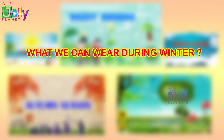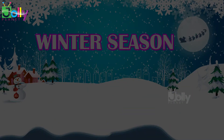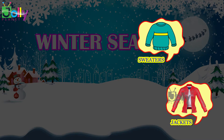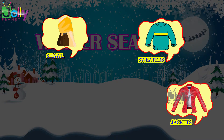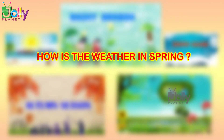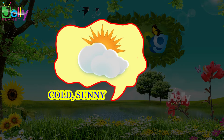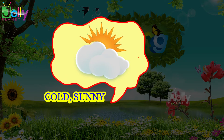What can we wear during winter? We wear woolen clothes such as sweaters, jackets, shawl, socks, and gloves. How is the weather in spring? In spring, sometimes the weather is cold and sometimes sunny.